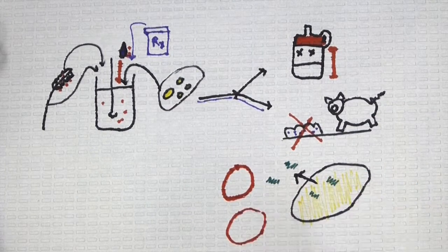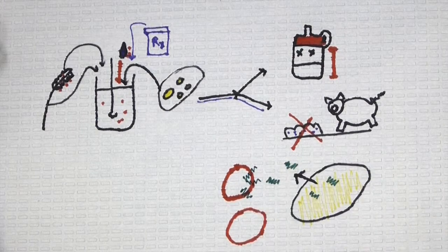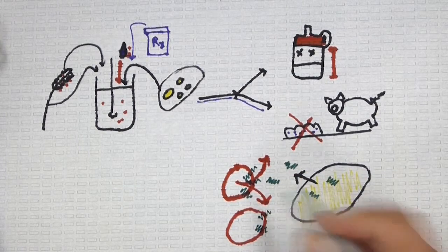The bacteriocins poke holes in the cell membrane of specific lactic acid bacteria and the cell contents leak out, killing the cells. The bacteriocins do not kill the yeast.